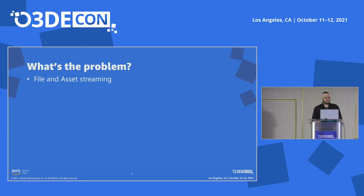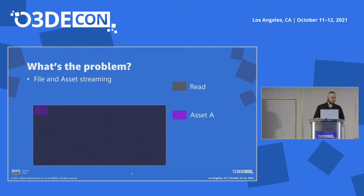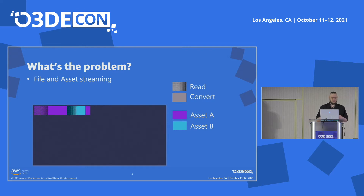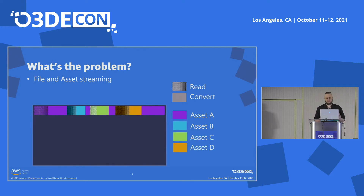To get a better idea of where we were a few years ago, let's walk through an example of what loading an asset looked like back then. Typically the asset manager would start by reading the file into memory and then begin the deserialization process — converting raw data into an asset. While doing this, it may encounter a dependency, so another part of the asset manager brings that into memory and converts it, and then we return to processing the original asset. This may happen a few more times as dependencies C and D are brought in, until finally the whole asset is ready and available to the engine.